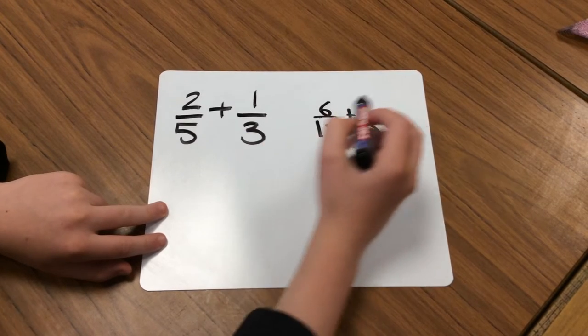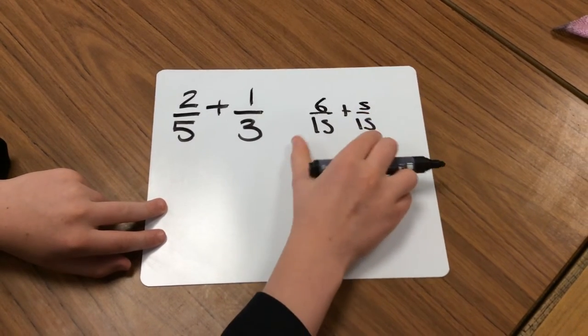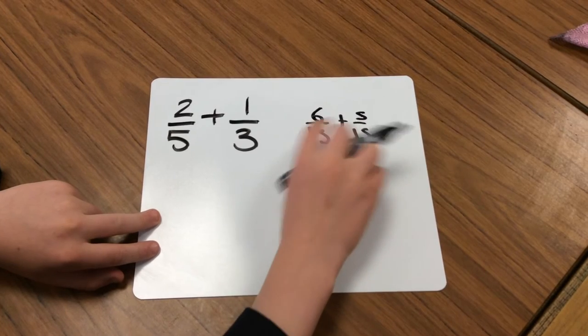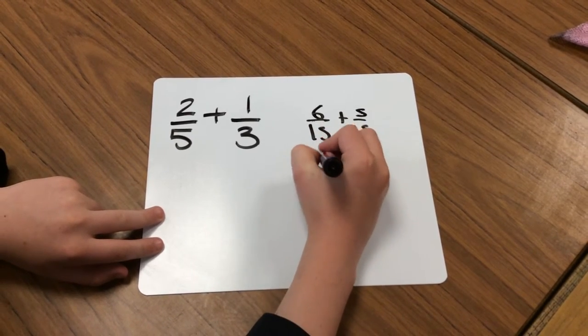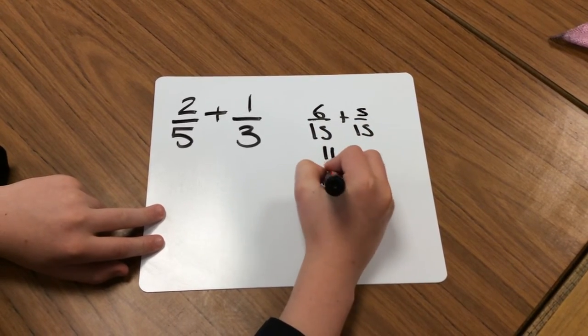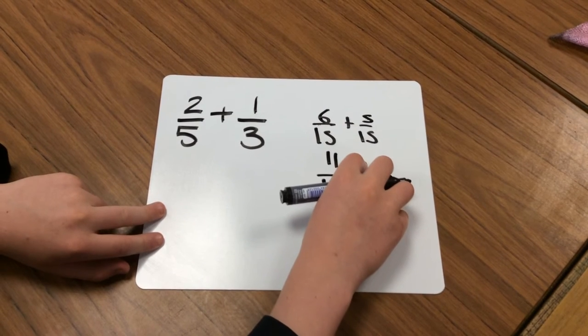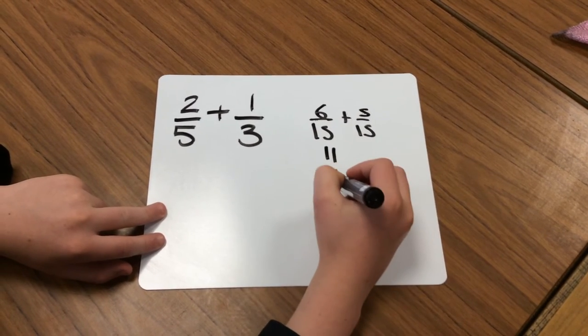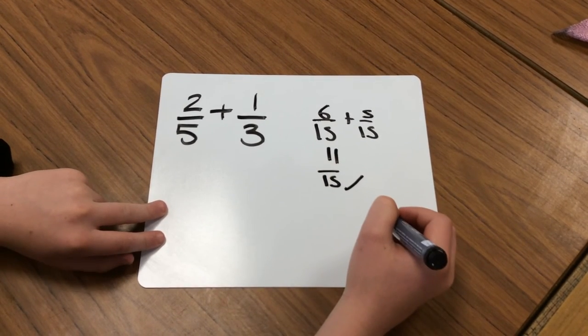Now the denominators are the same, you just add the top numbers which gets you eleven over fifteen. But you don't add the bottom numbers like that. And there's your answer, yay done finished.